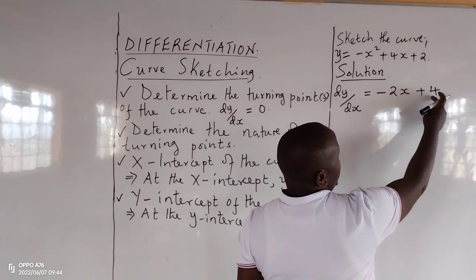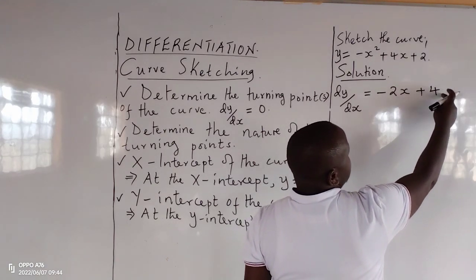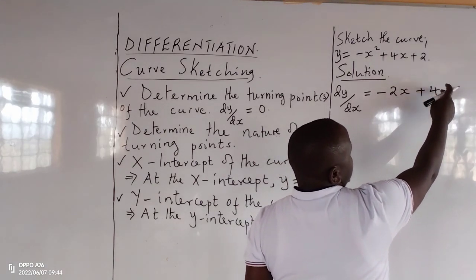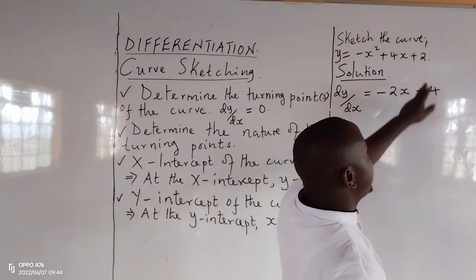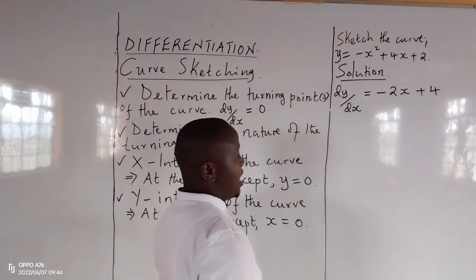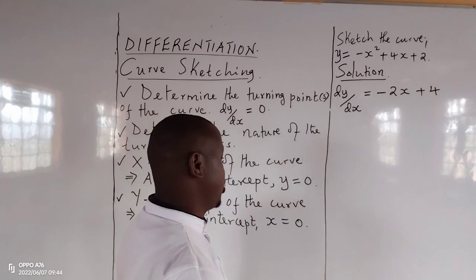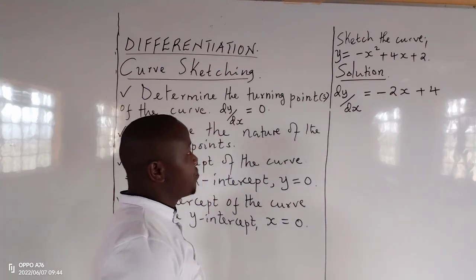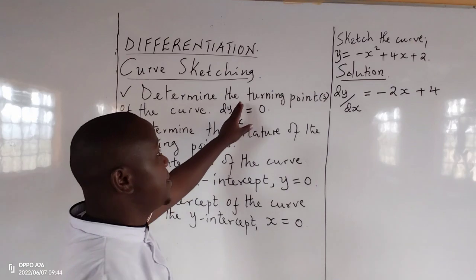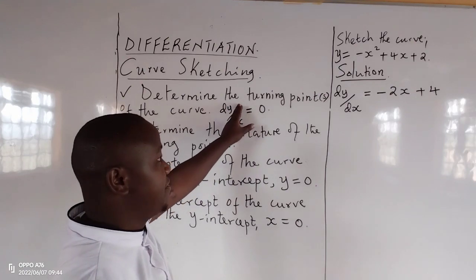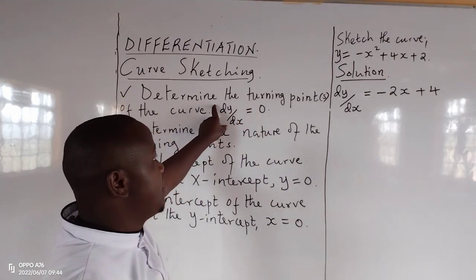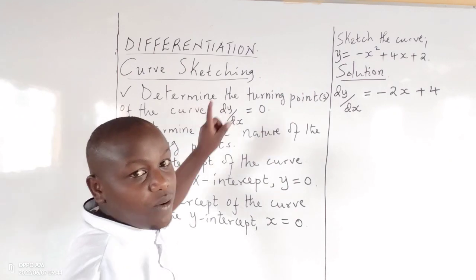Therefore, multiplying 4 by x to the power 0 gives 4, since x to the power 0 is 1. The constant disappears after differentiation. So the first thing to identify is the turning point of this curve, and at the turning point the gradient function equals zero.